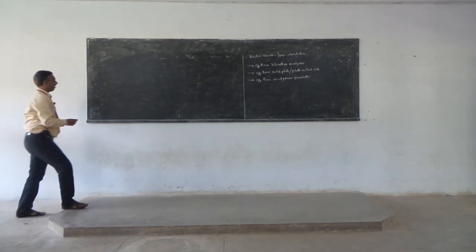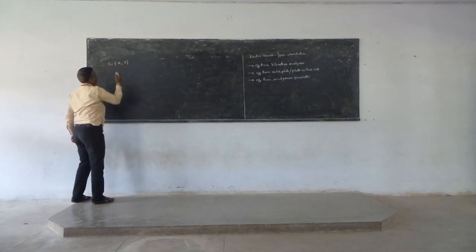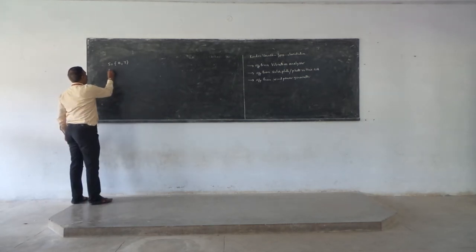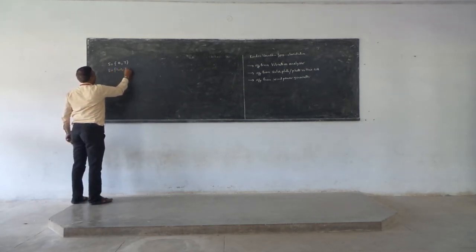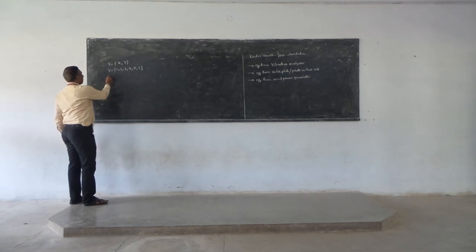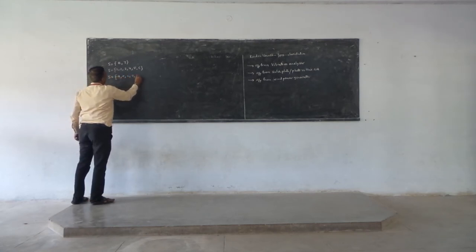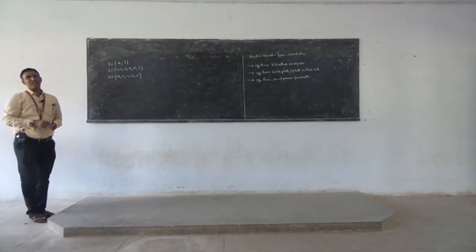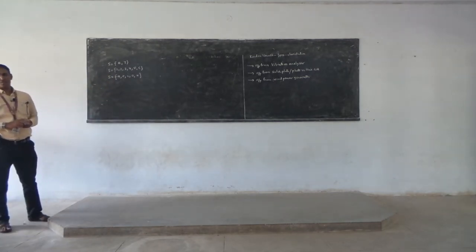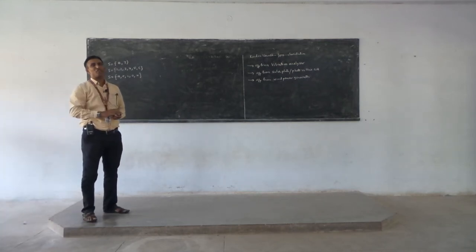If you perform a random experiment like throwing a coin, the outputs are a set of either heads or tails. If I throw a die, the sample space is 1, 2, 3, 4, 5, 6. Similarly, the vowels from the English alphabet are A, E, I, O, U. If we observe these sets, there is no consistent way of representing them. So a random variable provides a mechanism for the consistent representation of your sample set.